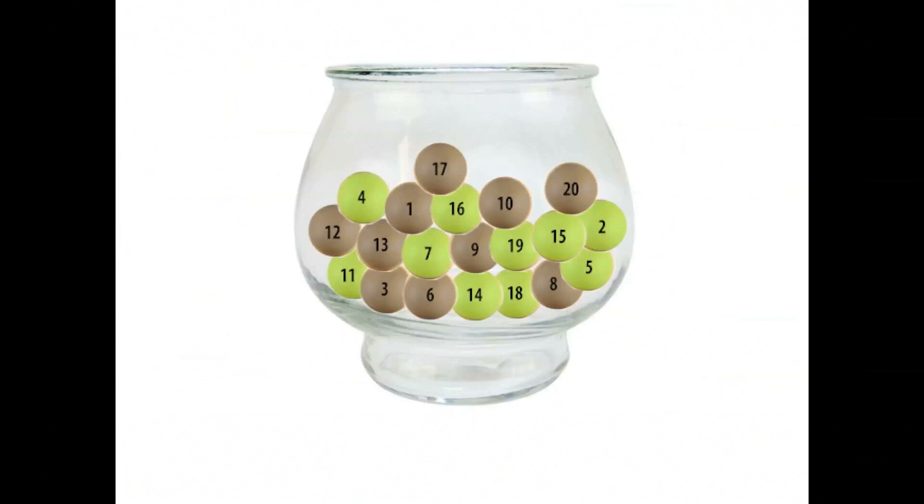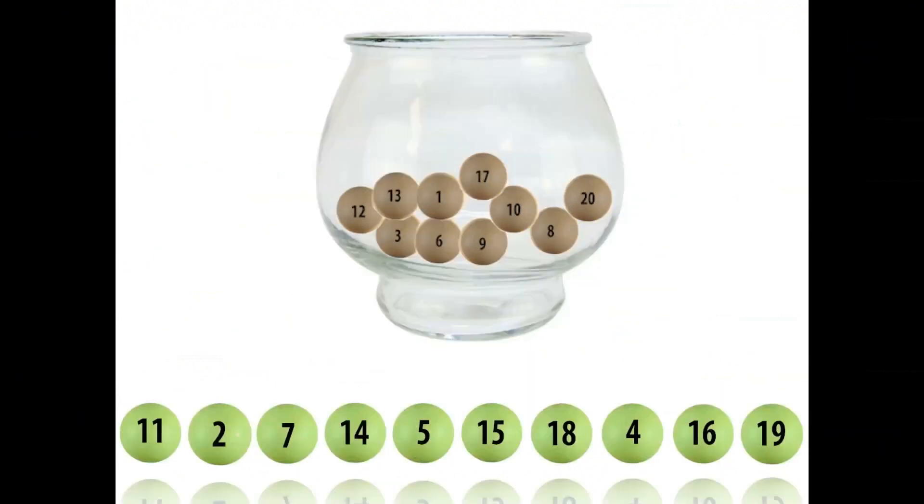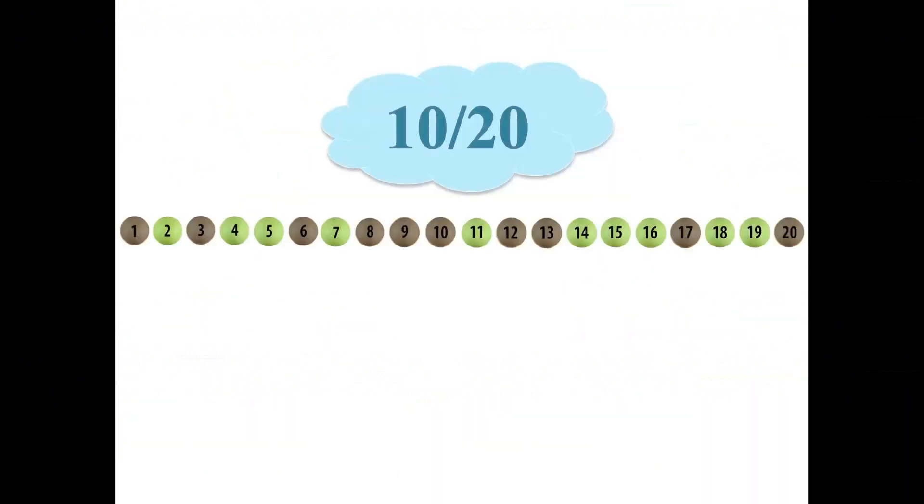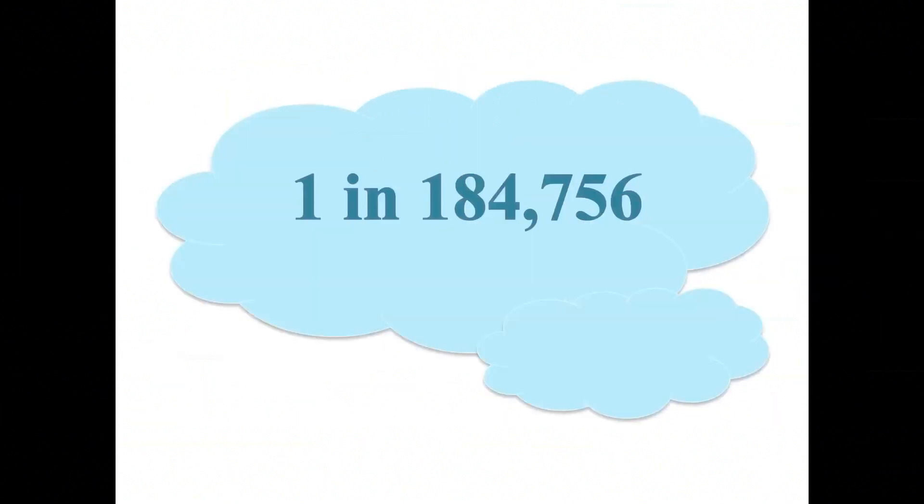When we draw out 10 of the 20 peas, it's much like running a lottery. Suppose that in this lottery, as 10 peas are drawn out of the bowl one at a time, all of them turn out to be green. Exactly how likely would this be? To calculate the likelihood, we first imagine the peas in a row, numbered in order from 1 to 20. Next, we multiply the successive proportions of green peas still in the bowl before each draw: 10 out of 20 times 9 out of 19 times 8 out of 18 and so on, times 1 out of 11.